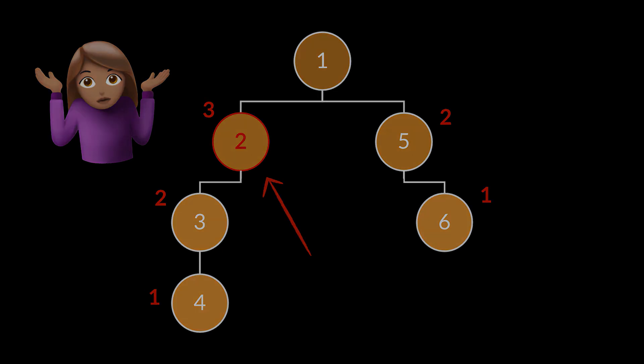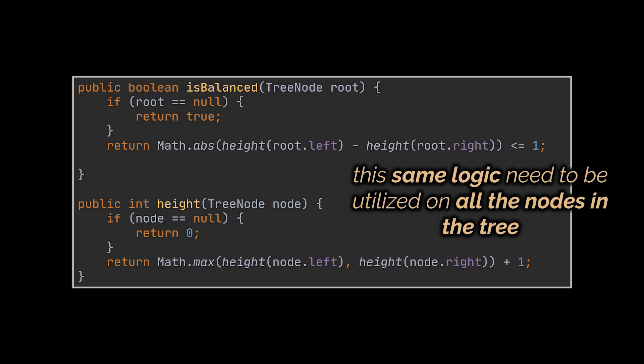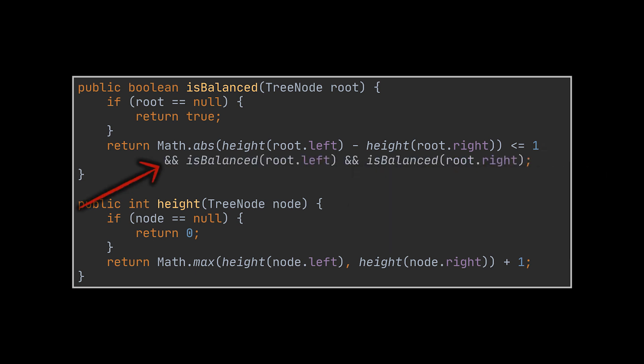So how do we fix the logic we wrote earlier to match these new criteria? Well, that is the beauty of recursion. After checking if the tree is balanced at its root, we need to utilize the same logic on all the remaining nodes in the tree, right? And this is done by simply calling the same method we are making use of on the root's left and right children. That's it. Our method now checks every single node in the tree and only returns true if all of them are balanced.